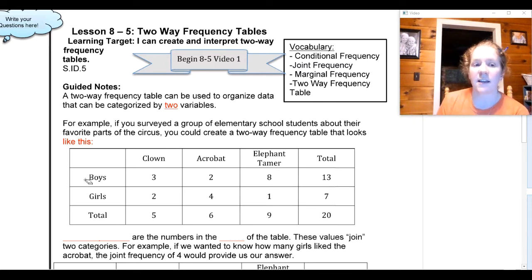I could figure out from this table the total number of boys is 13. The total number of boys who like acrobats is 2. The total number of girls is 7. The total number of girls who like clowns is 2. The total number of kids that like clowns is 5. If you're a boy and you like clowns, then you're one of 3. If you're a girl and you like clowns, then you're one of 2.